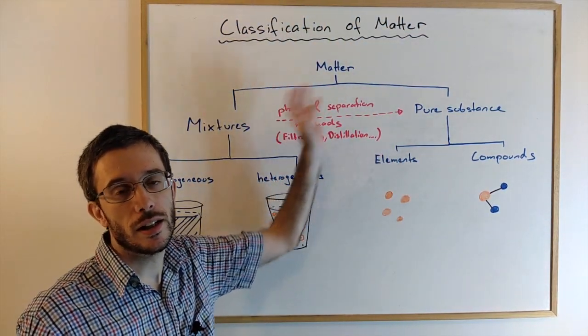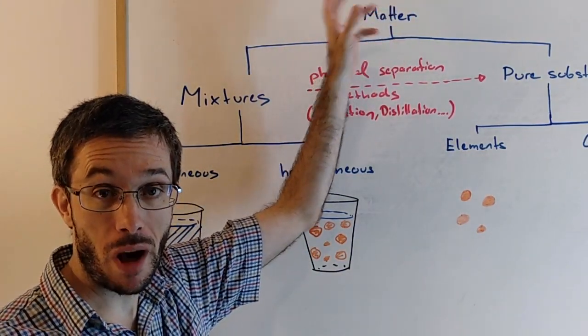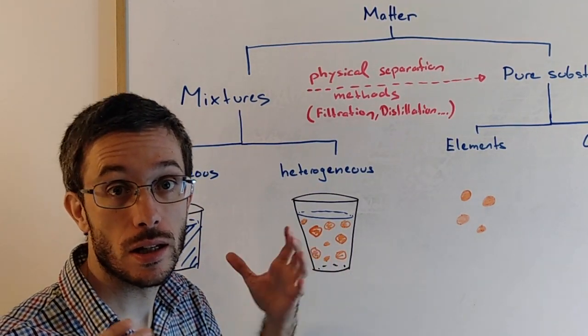Matter can be classified into different categories. First of all, what is matter? Matter is anything that has mass and occupies space.